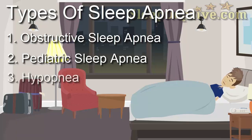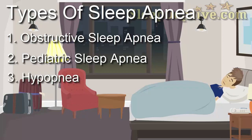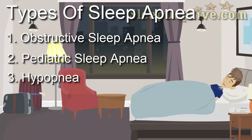The third type is hypopnea. Hypopnea can be defined as the sleep disorder where there is a decreased amount of air movement into the lungs, which causes oxygen levels in the blood to drop. This is commonly due to partial obstruction of the upper airway. However, in this state, the airflow is not completely stopped.